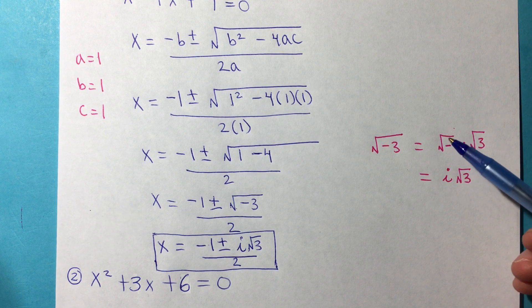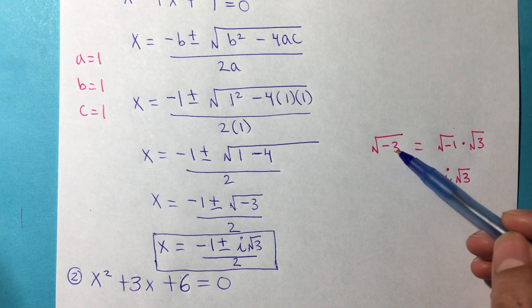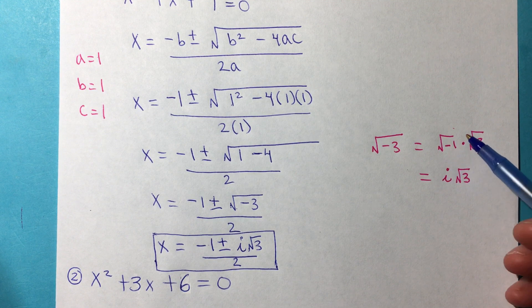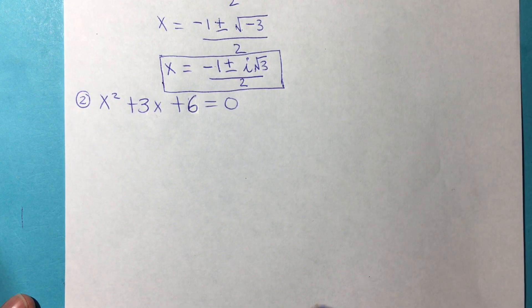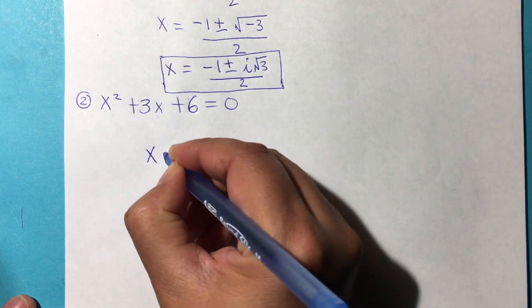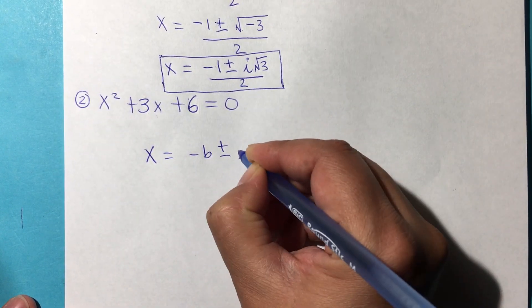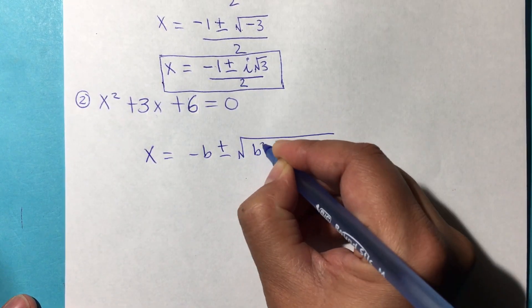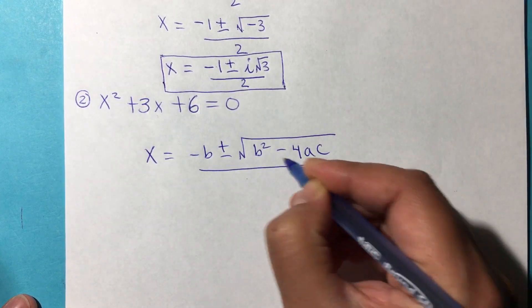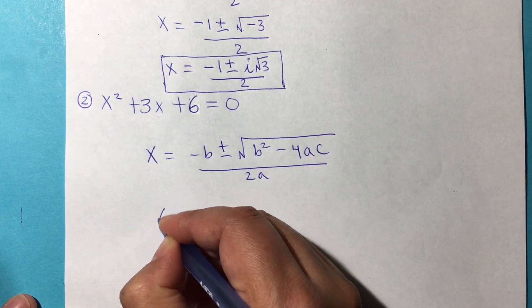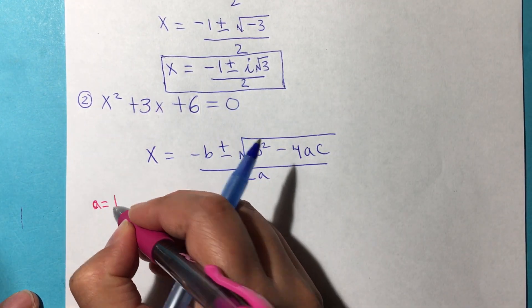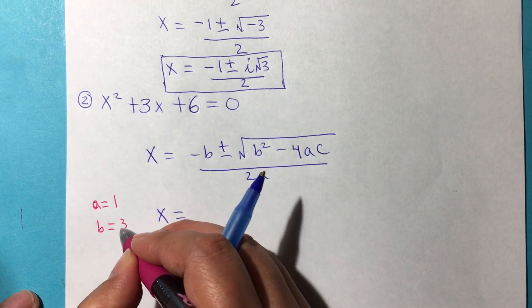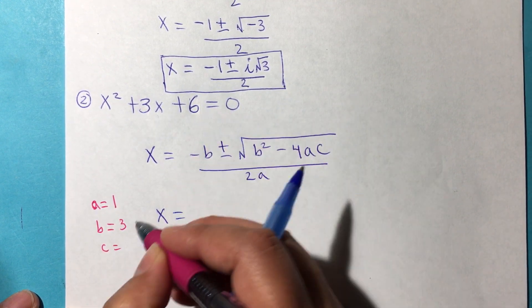If you need to see more examples about simplifying negatives or the explanation of i and i squared, then you can go to the first lesson in this unit. Let's go to number 2. Again, x is equal to negative b plus or minus the square root of b squared minus 4ac all over 2a. So the values are: a is 1, b is 3, and c is 6.